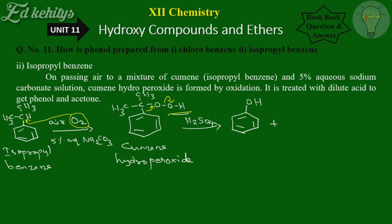The products are: phenol (with OH group on the benzene ring) and acetone (CH3-C=O-CH3). So this is how isopropyl benzene (cumene) is used to prepare phenol. Thank you.